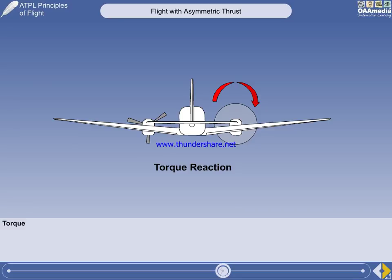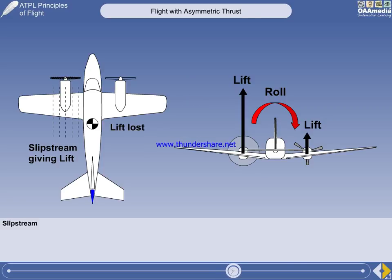Note, however, that if the propeller is windmilling, the torque is reversed, but is much less than the torque of the live engine. Any propeller-driven multi-engine aircraft will suffer a loss of lift from the slipstream-induced faster airflow over the wing behind the failed engine.